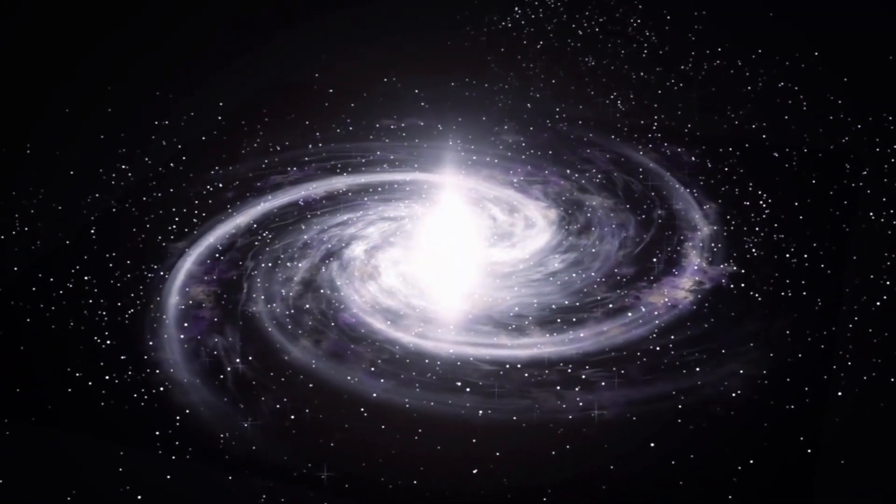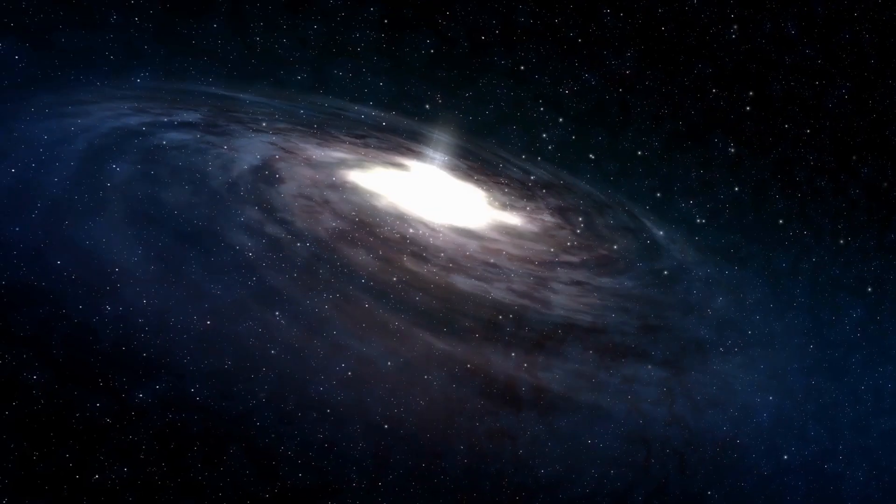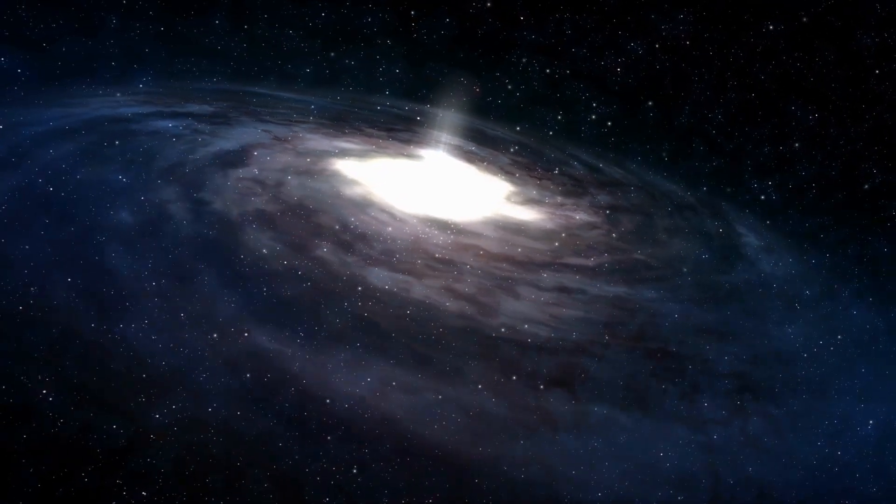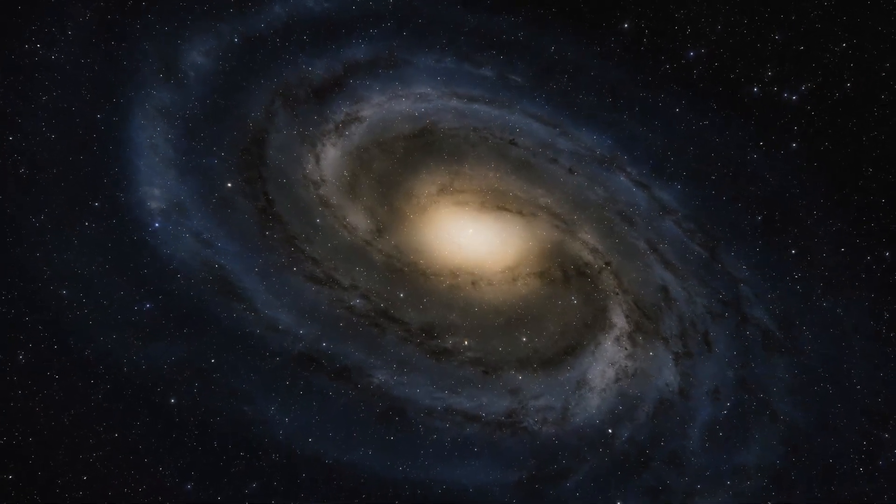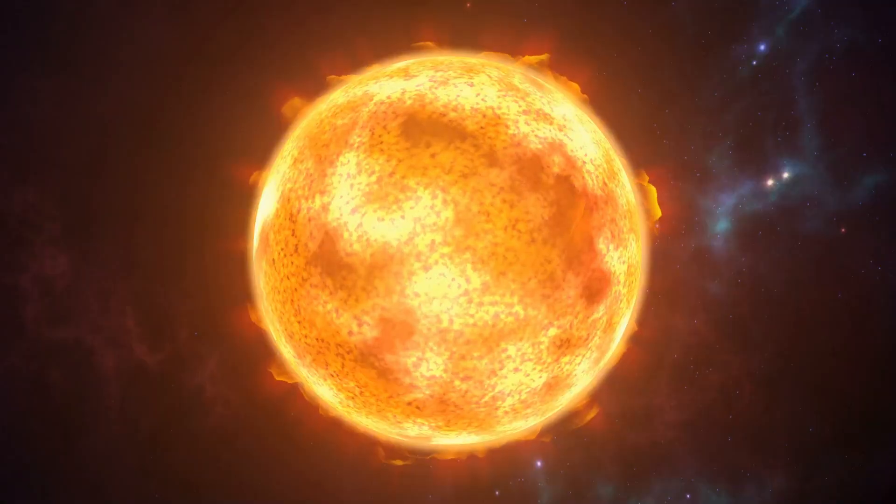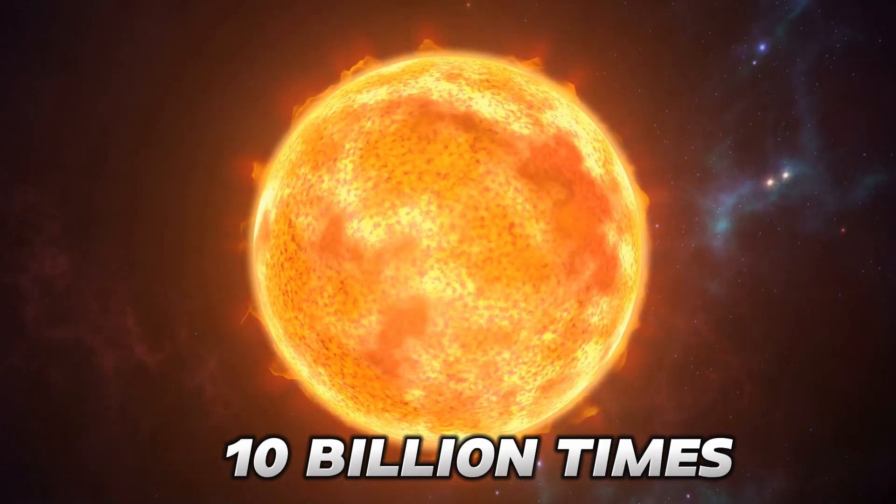Now, let's talk about the luminous bulge, which takes on the shape of an elliptical formation which reaches out to 10,000 light-years. The diameter of this bulge is somewhere near to 7 light-years, and the mass is 10 billion times that of the Sun.